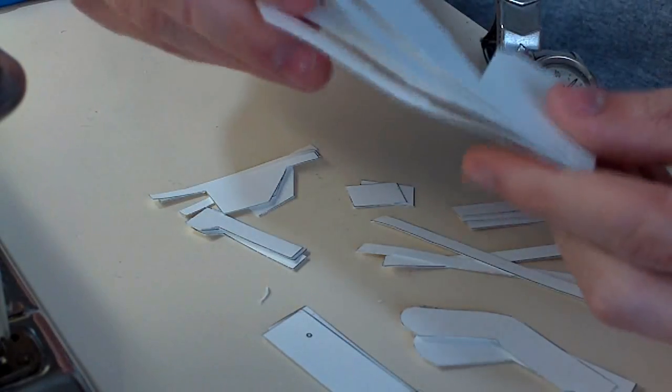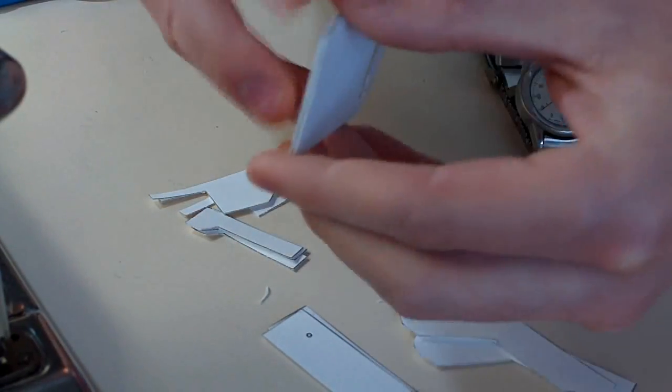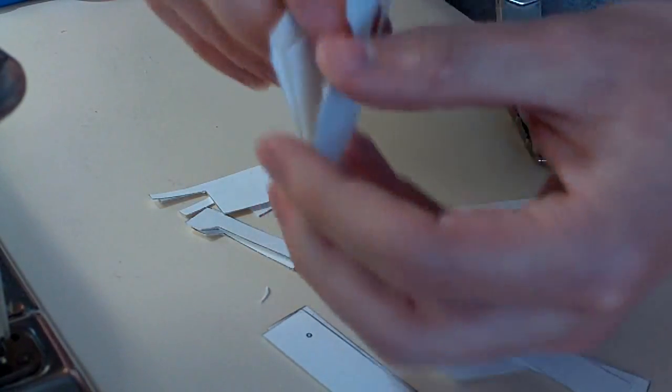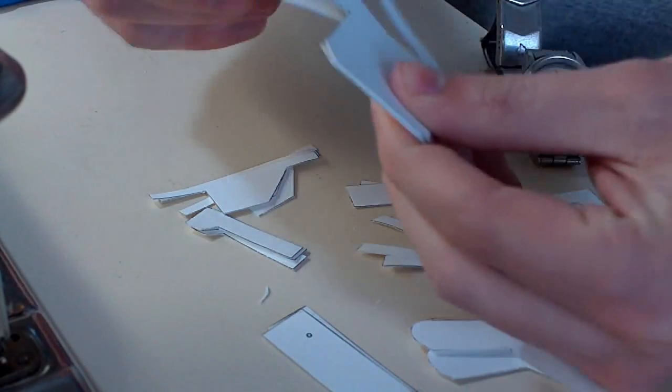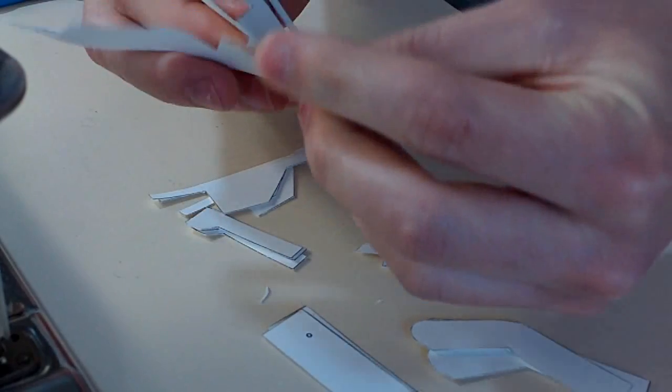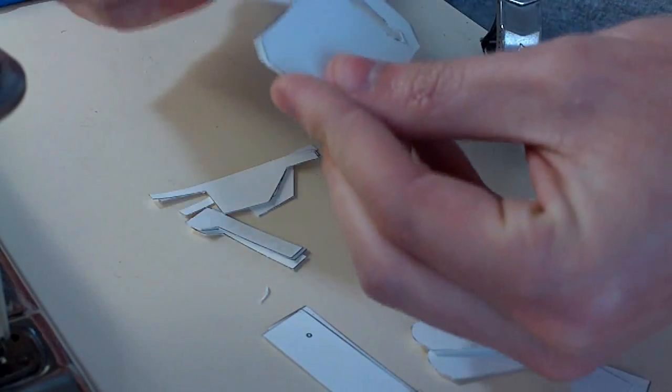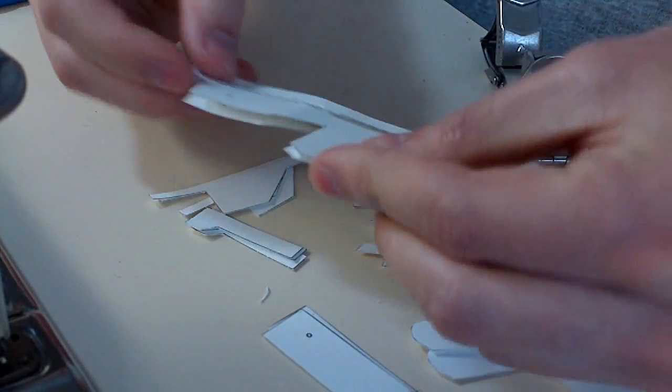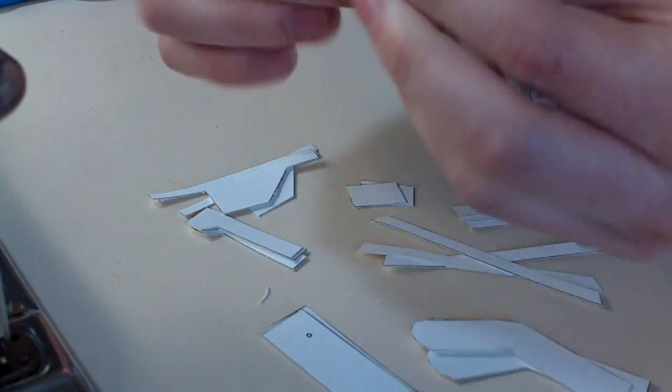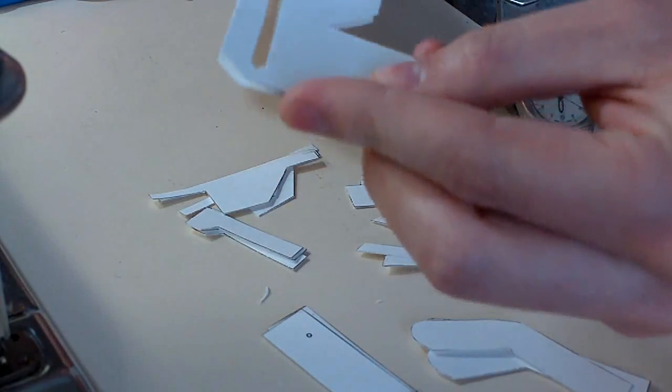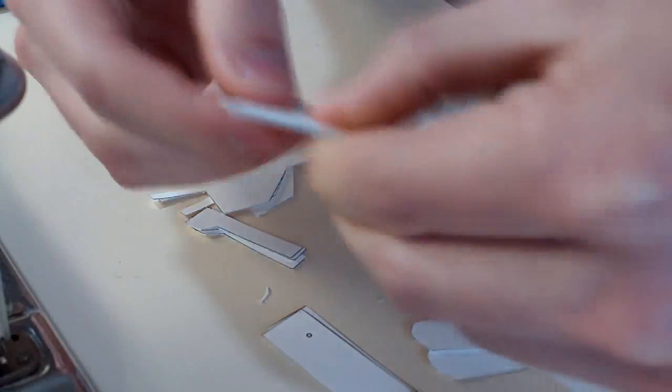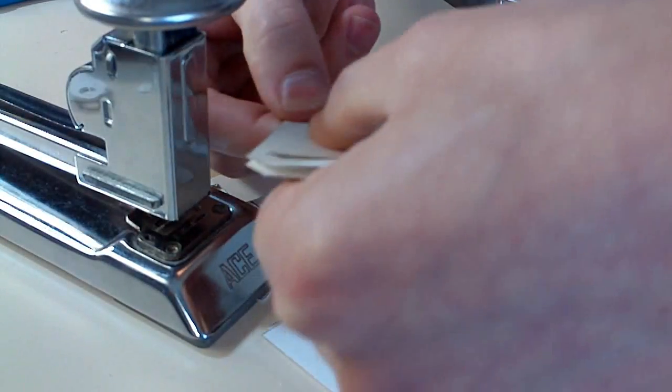You just want to sandwich the three inside pieces between there and do some alignment. You want to be pretty careful with the alignment because it will throw your card off if you're not quite aligned right. Especially this first one takes some working with. Some double sided tape might help here, but since I'm trying to do this with the least amount of tools possible, I'm not going to use it.